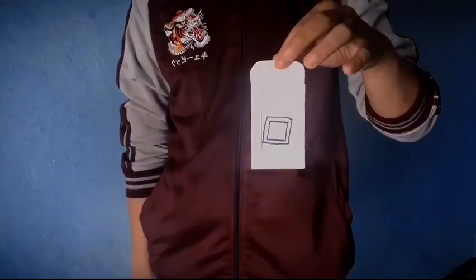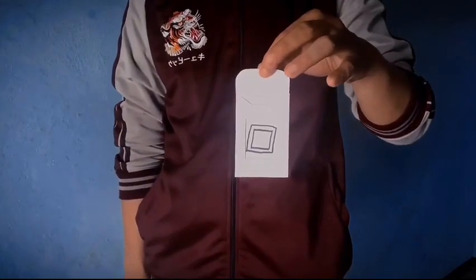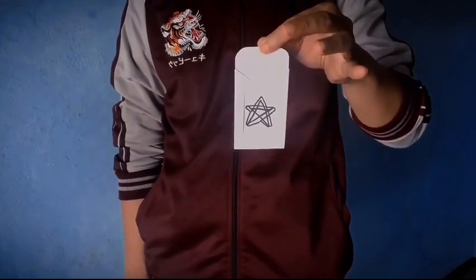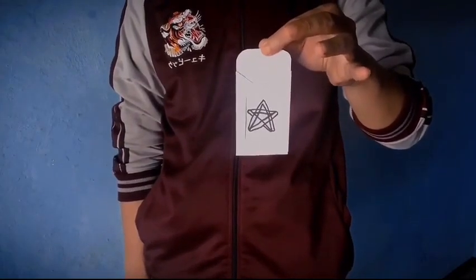This week on the vault, I'm featuring a very clever little switching envelope. This can be used to do a visual transformation, or you could also use this device to switch invisible information like a billet, a piece of paper, or a prediction. This is the Below by Zones.